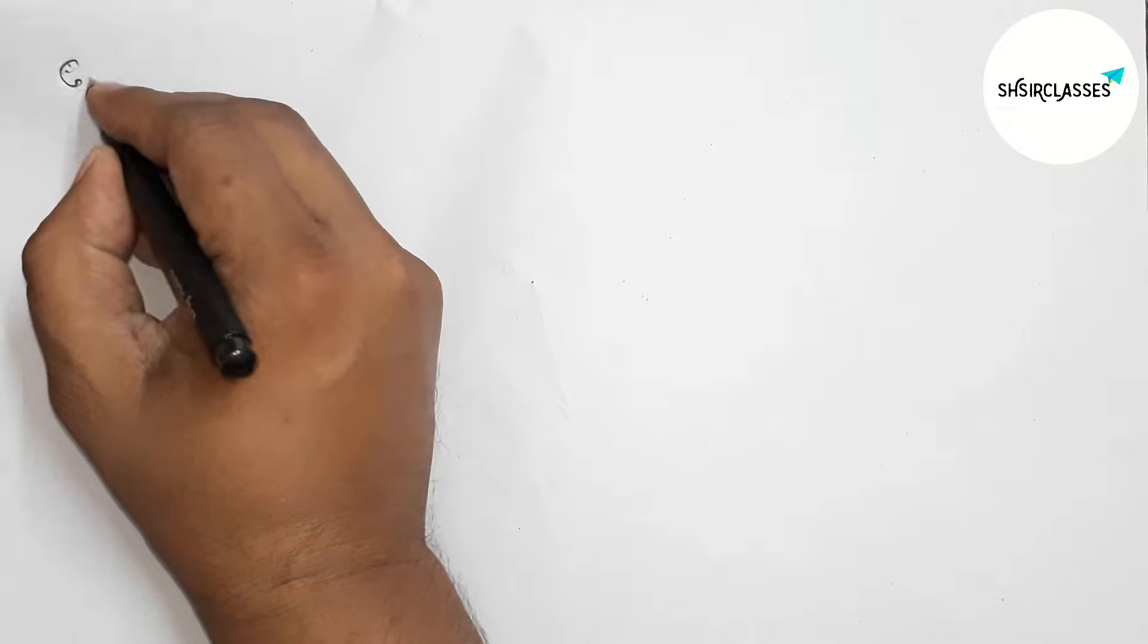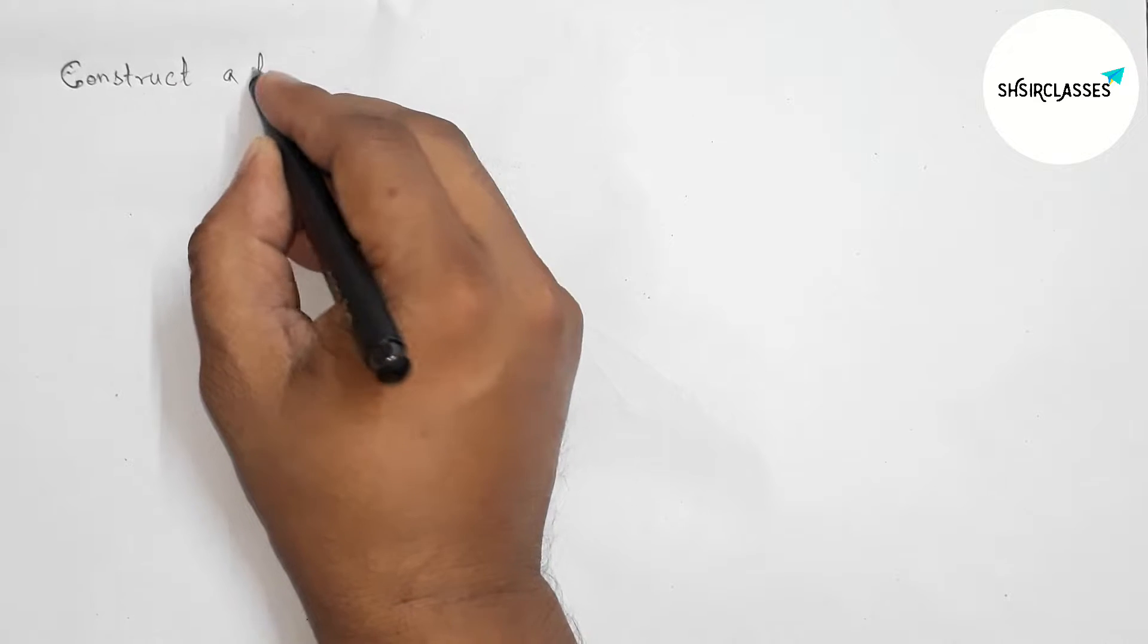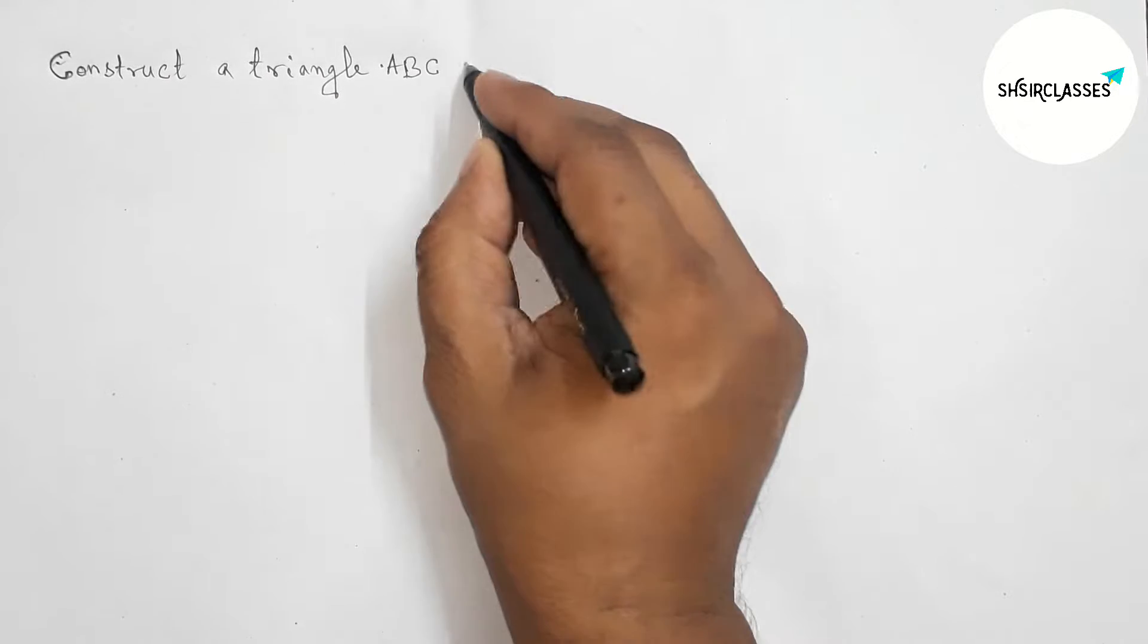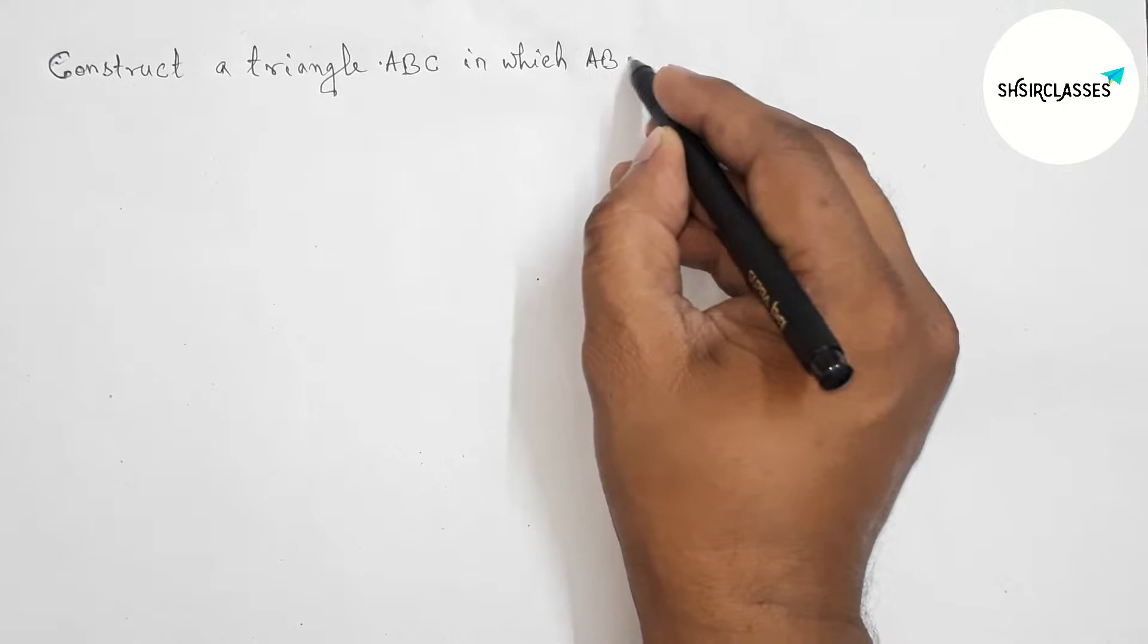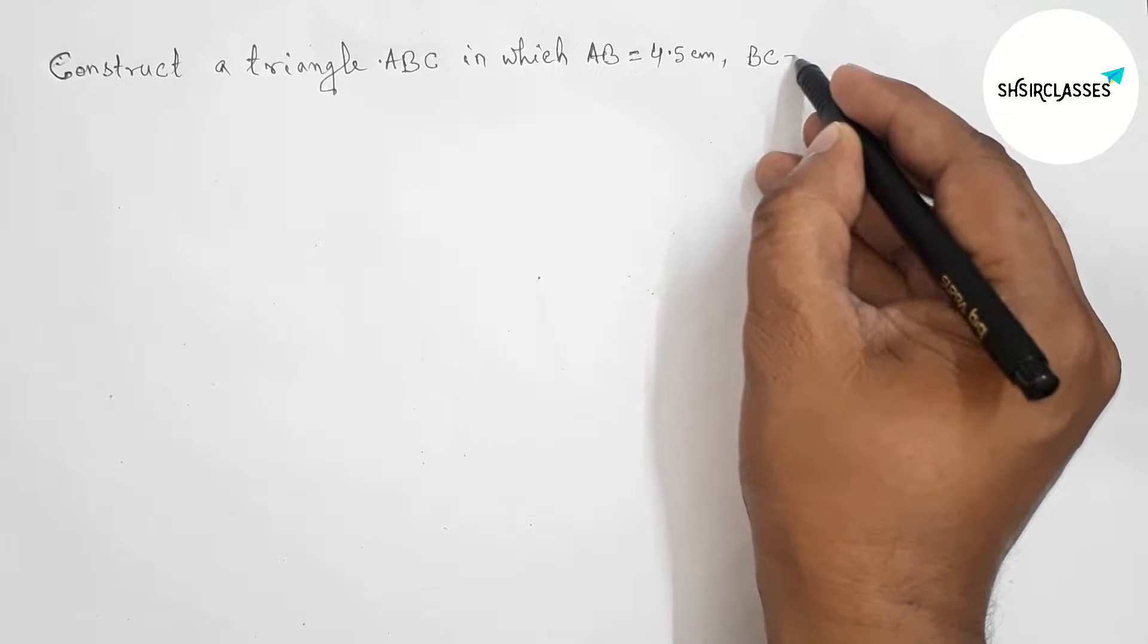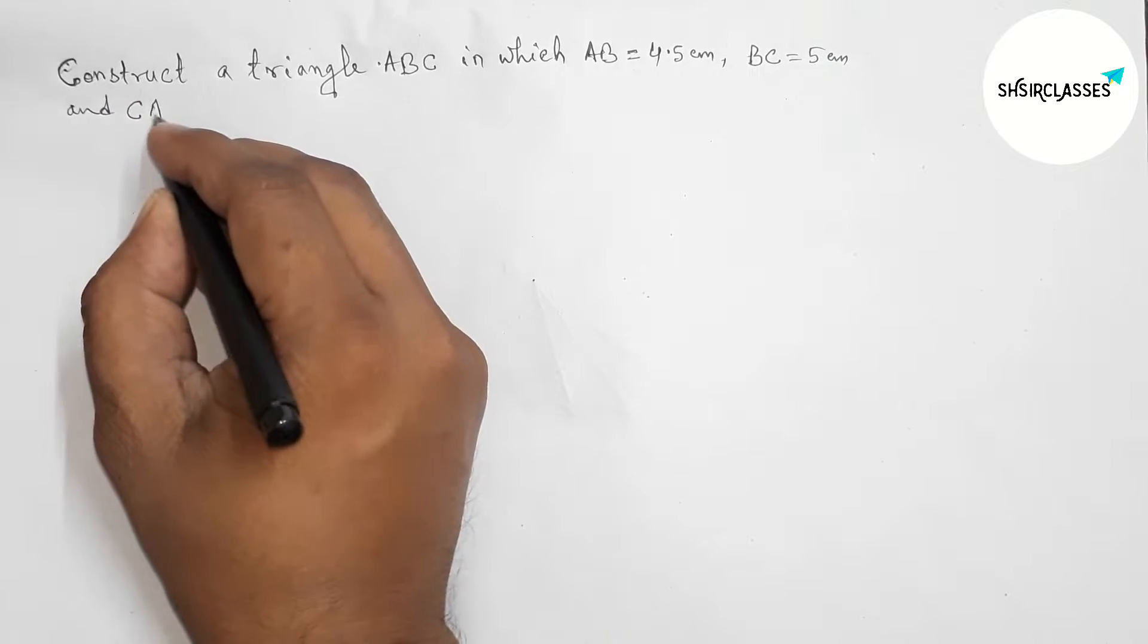Hi everyone, welcome to SA Share Classes. Today in this video, we have to construct a triangle ABC in which the three sides are given: AB equals 4.5 centimeters, BC equals 5 centimeters, and CA equals 6 centimeters in an easy way.